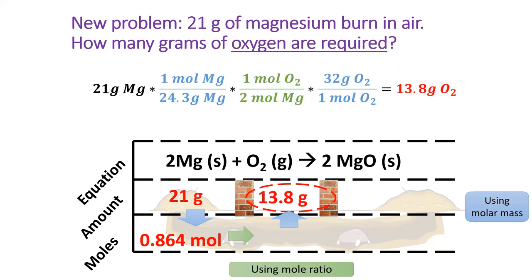To get the answer to this problem, we convert it in this order. First, convert grams of magnesium to moles of magnesium using the molar mass. Next, convert moles of magnesium to moles of oxygen using the mole ratio. Notice the mole ratio is different than in the last example because the coefficients of the substances we're interested in are different.